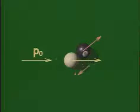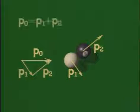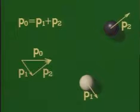This is a vector equation. The three vectors form a triangle, and in this case, a very special triangle.